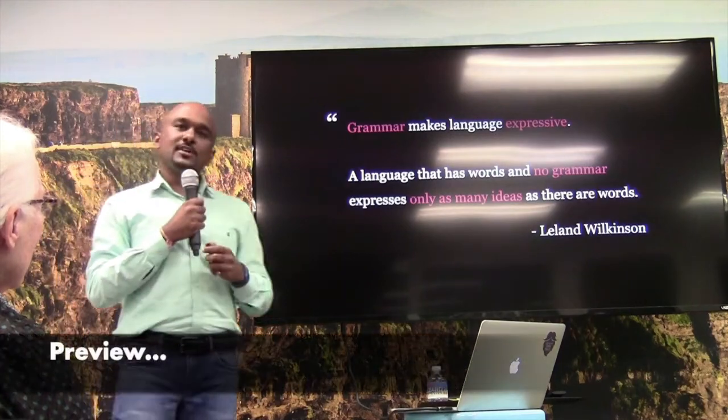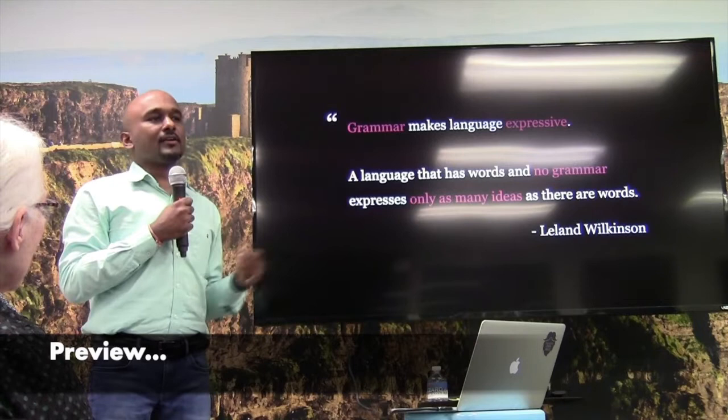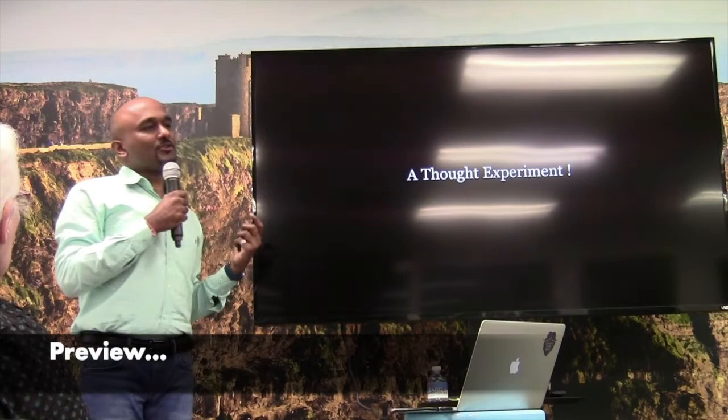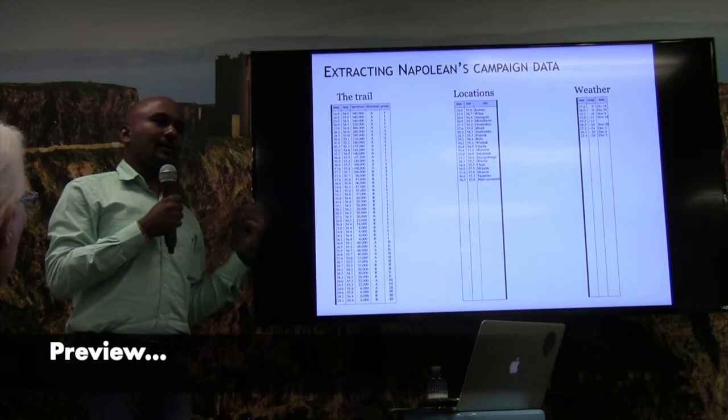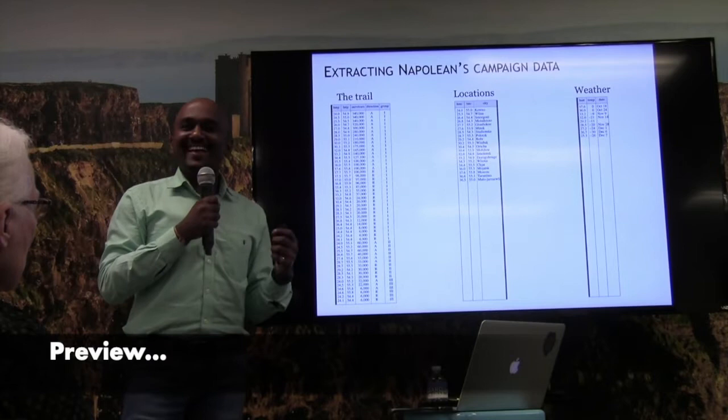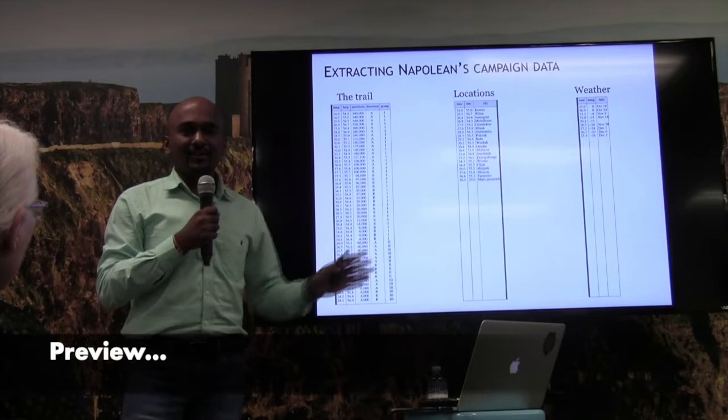A language which has no grammar can express only as many ideas as a number of words — quite like tools which have a limited set of charts and don't give you the flexibility to do beyond that. We want to recreate this visual and see what would happen if we ignore the principles of encoding and ignore the principles of grammar of graphics. I've taken the same data and went about recreating it using a modern visualization package, using the prebuilt charts and prebuilt colors — everything is default because visuals have an easy drag-and-drop interface.